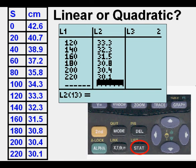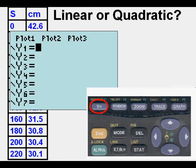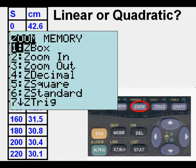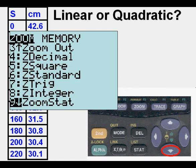And from here, we can go to Y equals, and in Y equals, we'll turn on our plot, make sure it's activated. Then we go to zoom, and we go to 9, which is zoom stat.